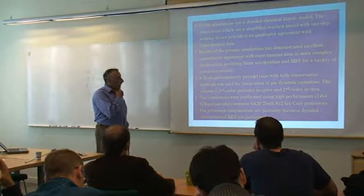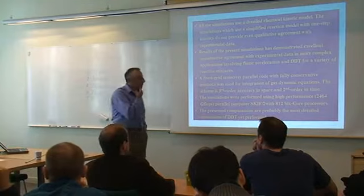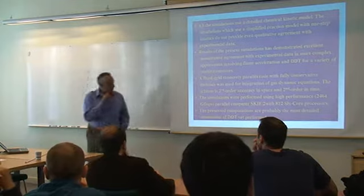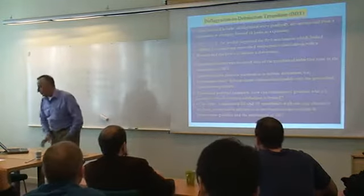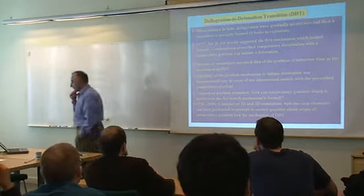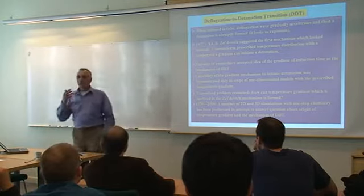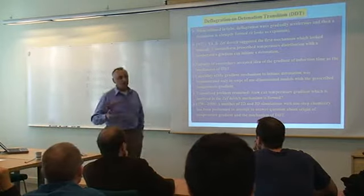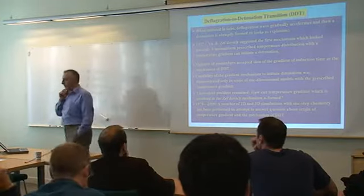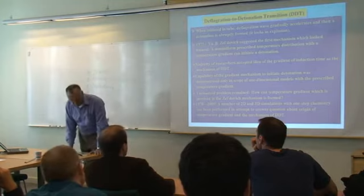We use a detailed mechanism, and here are our computational tools and what kind of machine was used. Now I shall go to the history of the problem. The first, and more or less reasonable — at least it looked quite natural — mechanism of transition was proposed by Zeldovich, and the idea was the gradient mechanism, proposed in 1977.